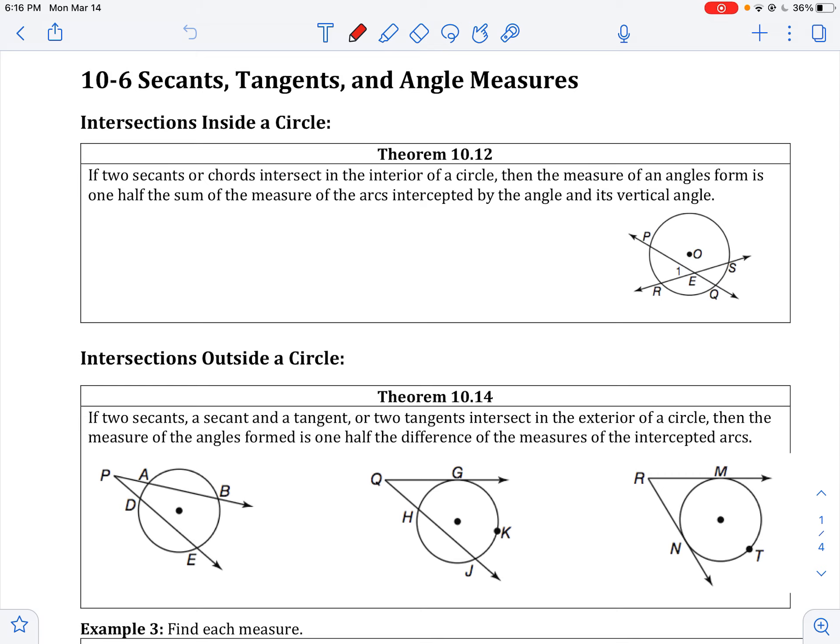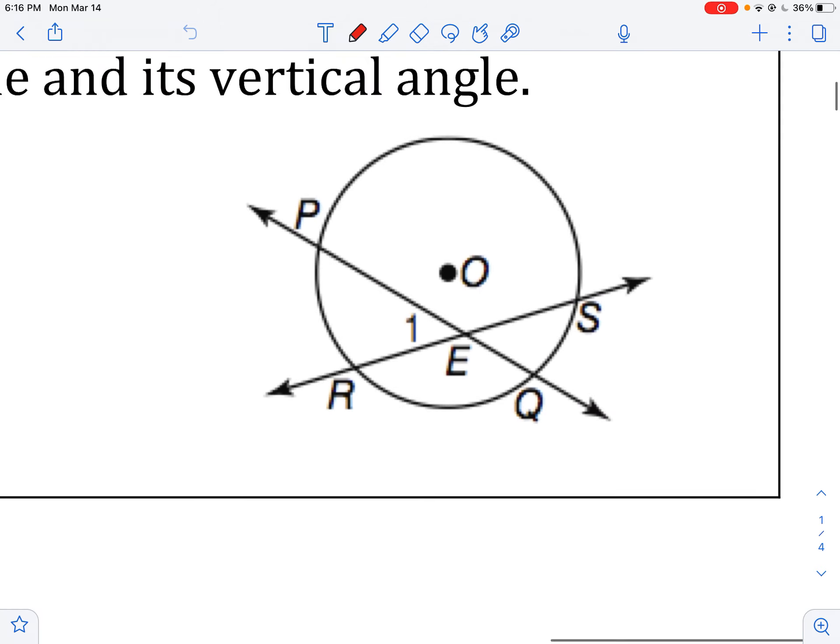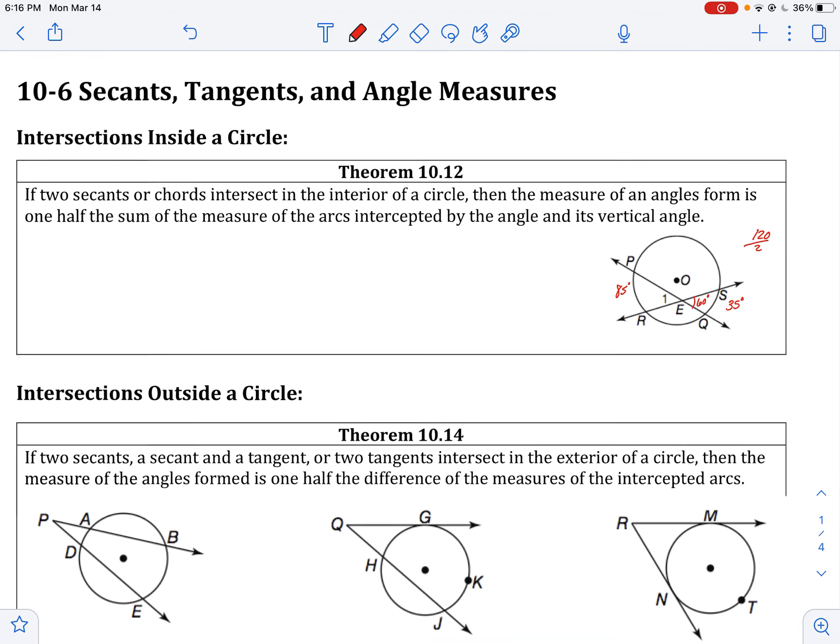So on 10-6, we talked about if two secants intersect inside the circle, then let's say this is 35 degrees and 85 degrees. I would add those two up to get 120 and divide by 2 to find out that that is 60 degrees. So that's if it's intersecting inside the circle. I would add them up and divide by 2.